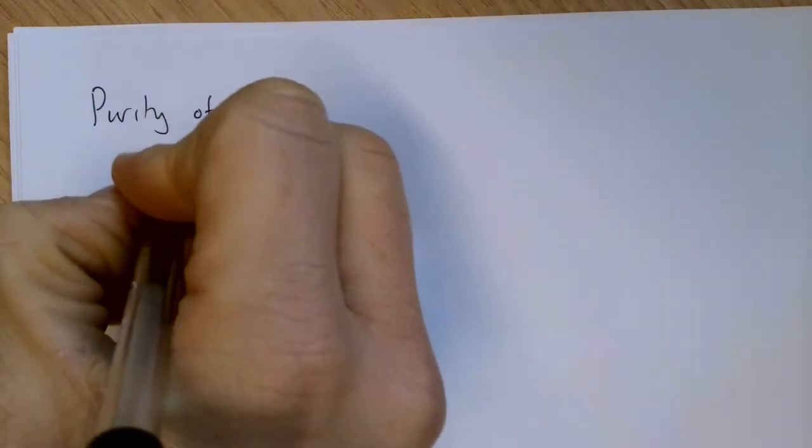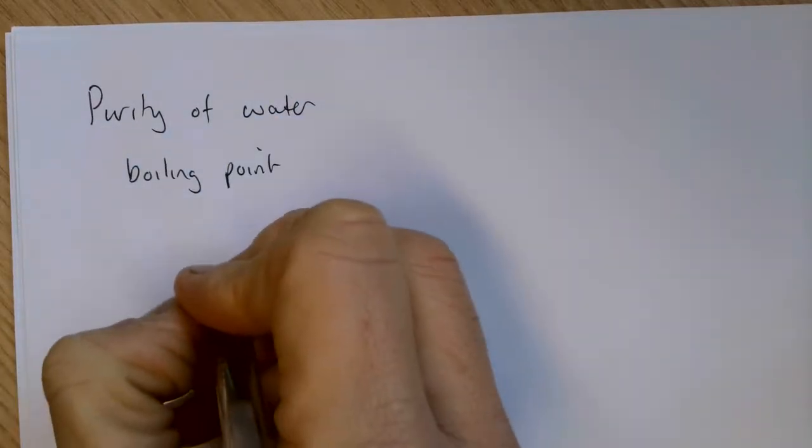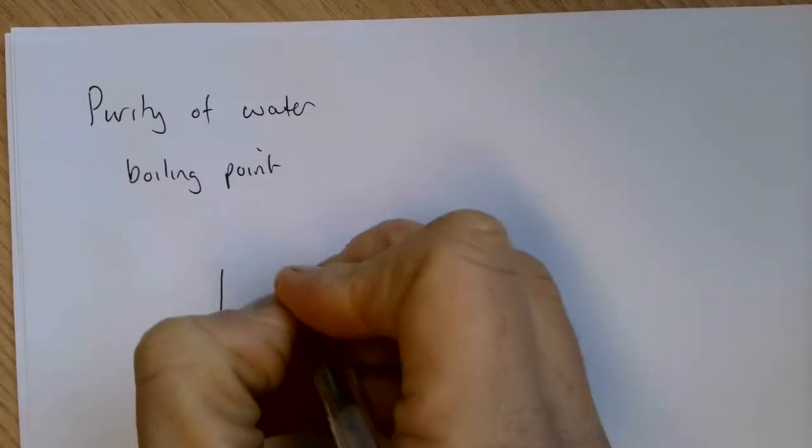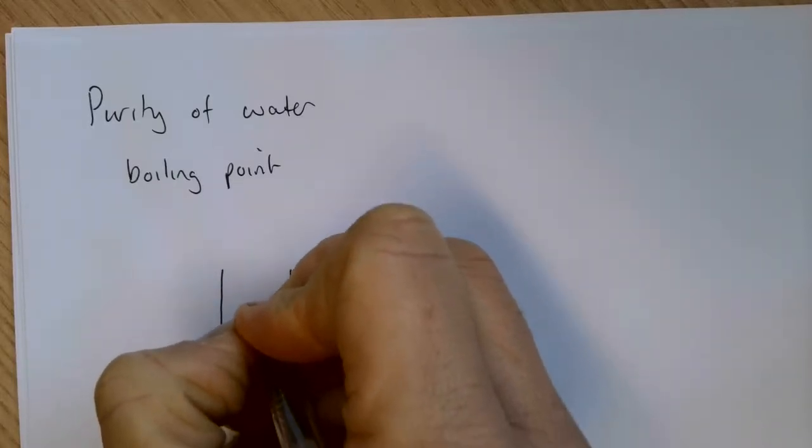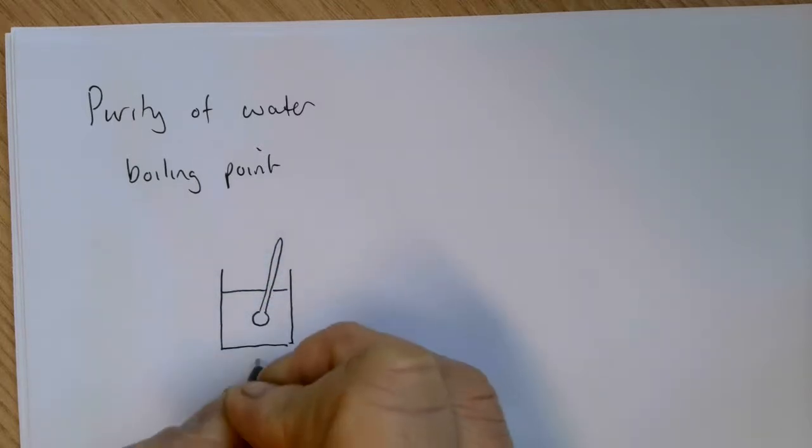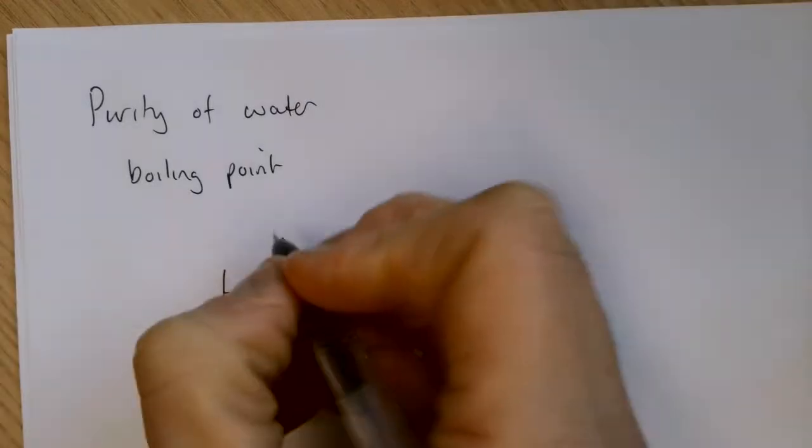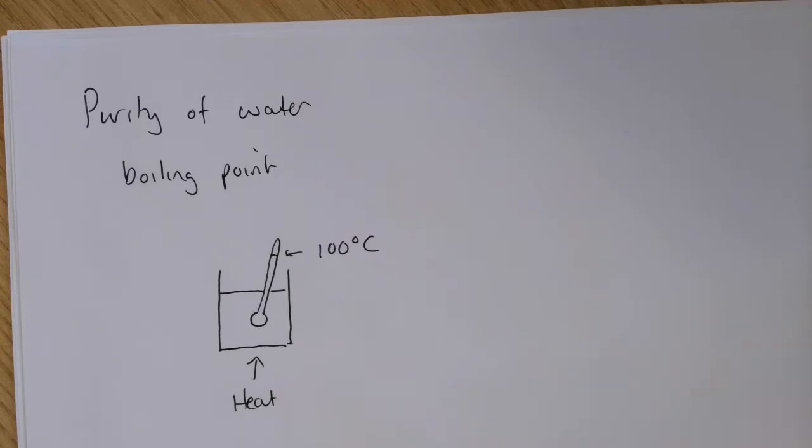One of the simplest ways to find out if water is pure or not is from its boiling point. In reality, this practical will be quite difficult to do, but theoretically we can take a water sample and place a thermometer in our water sample.